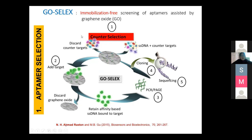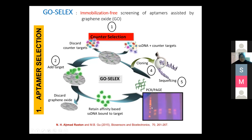After counter selection, we add our target — VASPIN. We recover the DNA that binds to VASPIN. Only those strands undergo amplification — we amplify the single-stranded DNA bound to VASPIN using PCR, then use PAGE to separate the double-stranded DNA back into single-stranded DNA. This cycle is repeated until saturation. From the picture, one strand goes this way and the other goes another way — we cut the gel and proceed with the next round.